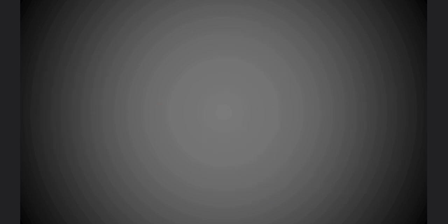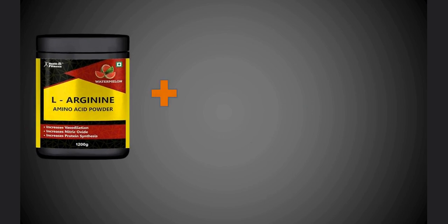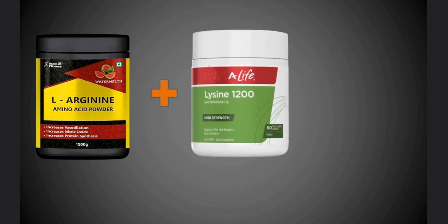While ingestion of 1.2 grams of arginine plus 1.2 grams of lysine by young males increased plasma GH concentrations within 30 minutes, and peak GH concentrations were nearly 8-fold greater 90 minutes after ingestion.